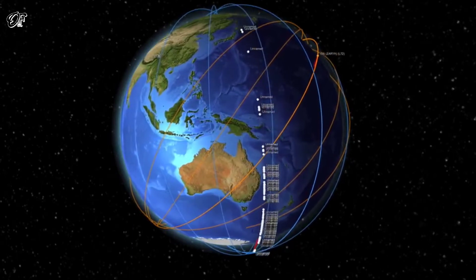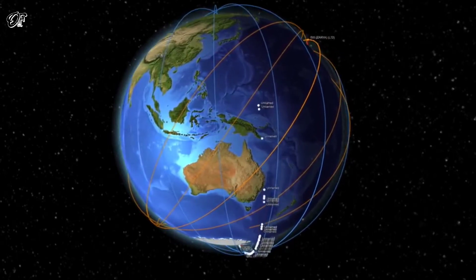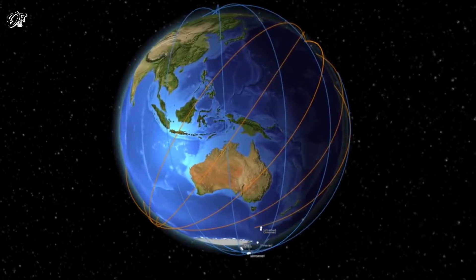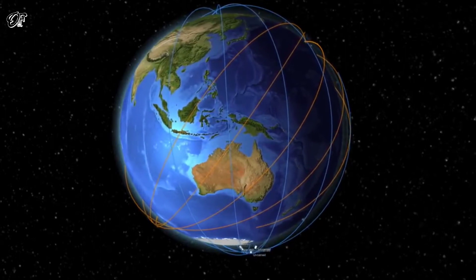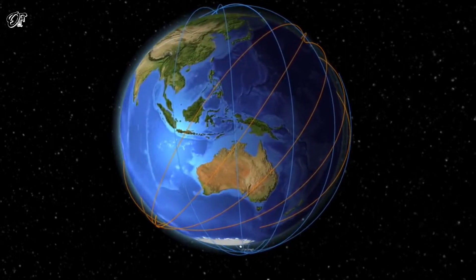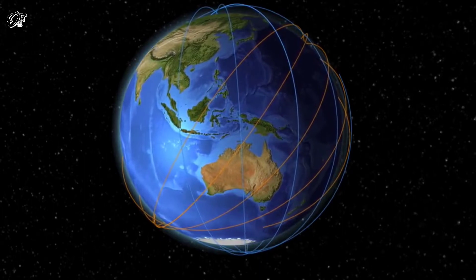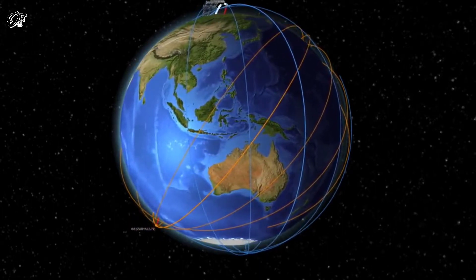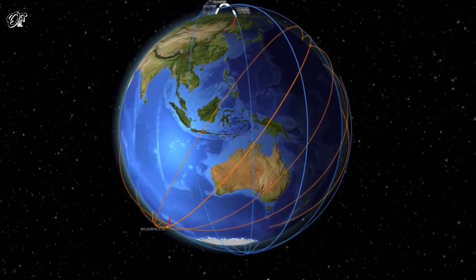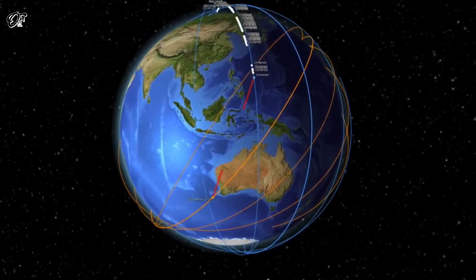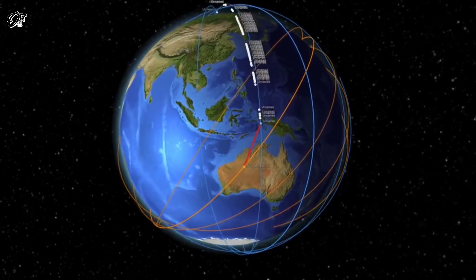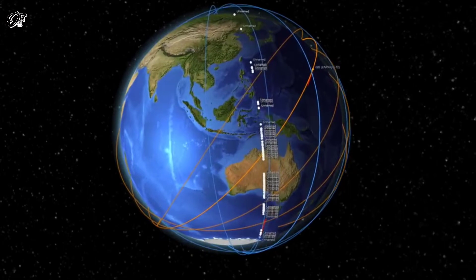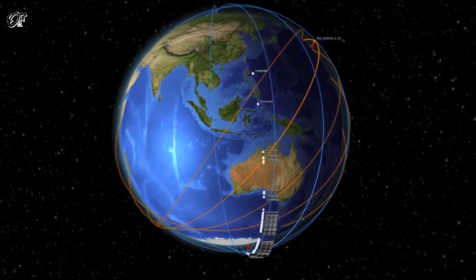A particularly interesting example is the SpaceX Starlink constellation of satellites. SpaceX is in the process of deploying thousands of satellites to provide worldwide internet access. These satellites will orbit Earth in a series of orbital planes inclined by 53 degrees relative to the equator. SpaceX has had three dedicated Starlink launches so far, with each launch releasing 60 spacecraft.